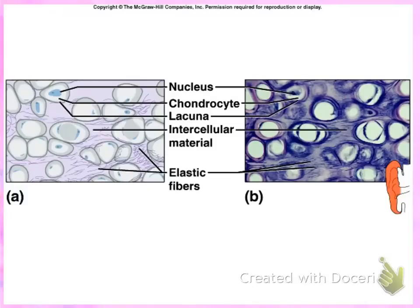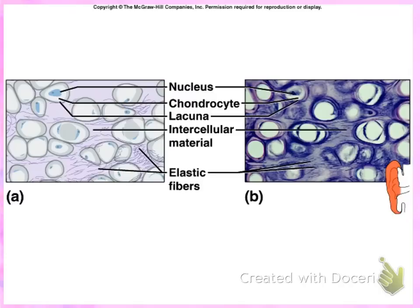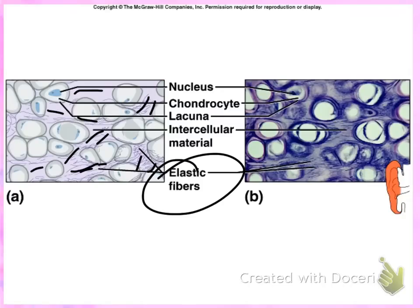It is going to be difficult to distinguish between hyaline cartilage and elastic cartilage because they are both cartilage and the chondrocytes look very similar — like the eye or hard-boiled egg shape. But unlike hyaline cartilage, in elastic cartilage you can actually see tiny little lines running through the ground substance. If you can see dark areas where it looks like tiny lines are going through it, then you are looking at elastic cartilage.